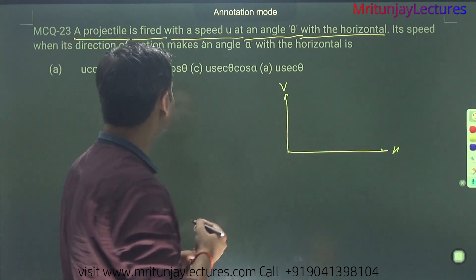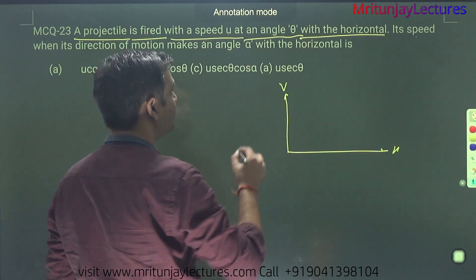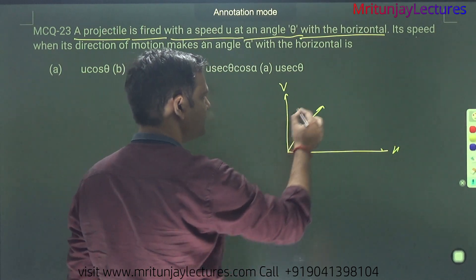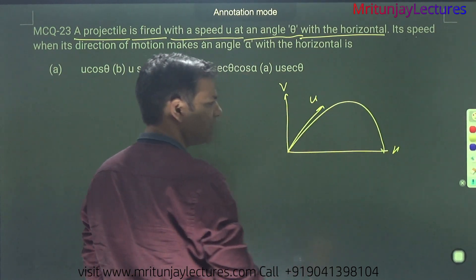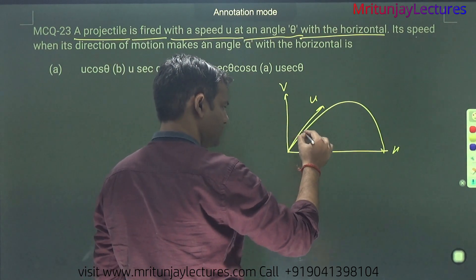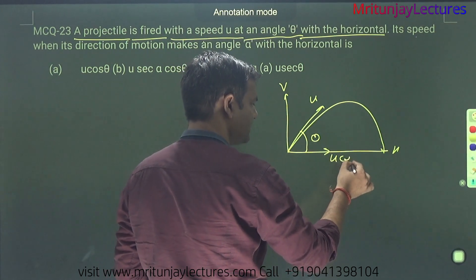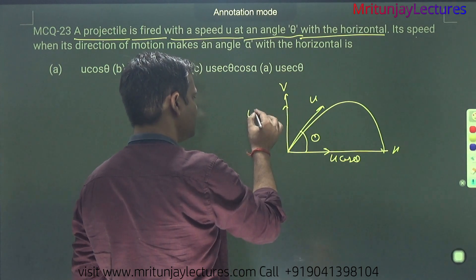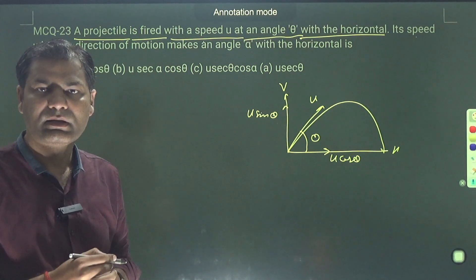According to the question, a projectile is fired with a speed u at angle theta with the horizontal, means like that one. That is u. Corresponding to that one, if you fire with a horizontal angle theta, so this one is u cos theta and here u sin theta. Very simple.